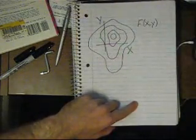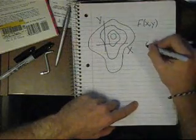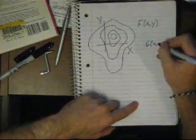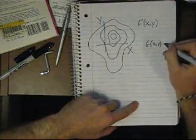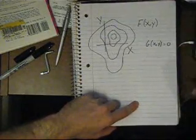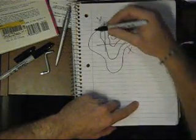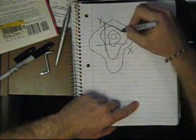So those are contours of f. And then we have some other function, g(x,y). And we could draw all the contours of that, but we're only interested in one particular contour, g equals 0, because that's our constraint. And so we have a contour of g like this.